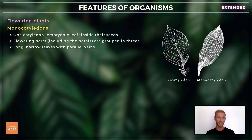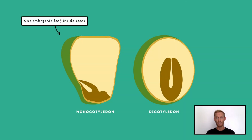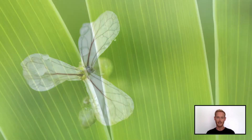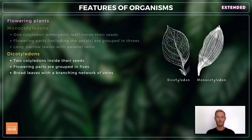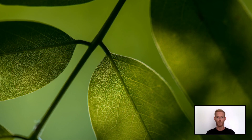Flowering plants are divided into two subclasses: monocotyledons and dicotyledons. Monocotyledons only have one cotyledon, or embryonic leaf, inside their seeds. Their flower parts, including the petals, are grouped into threes, and they usually have long, narrow leaves with parallel veins. Dicotyledons have two embryonic leaves in their seeds. Their flowering parts are grouped into fives, and they usually have broad leaves with a branching network of veins.